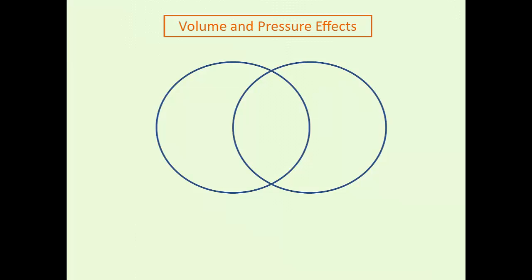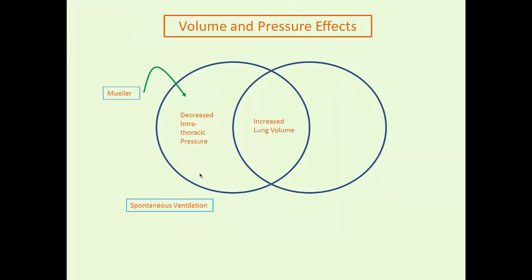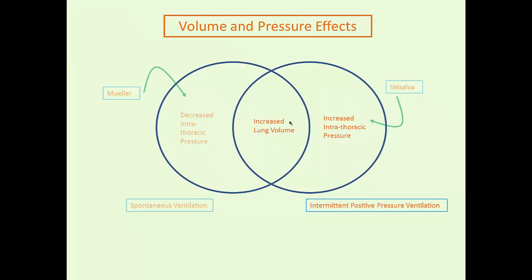Returning to the Venn diagram of Chapter 3, we're working our way through it, teasing out the volume and pressure effects and understanding heart-lung interaction. Part A was increased lung volume and its effects. Part B was decreased intrathoracic pressure only without lung volume. Part C was decreased intrathoracic pressure with an increase in lung volume — a spontaneous breath. Part D was an increase in intrathoracic pressure without an increase in lung volume — the mini Valsalva. Now we're talking about the two things together: increased lung volume with increased intrathoracic pressure — a mechanical breath.